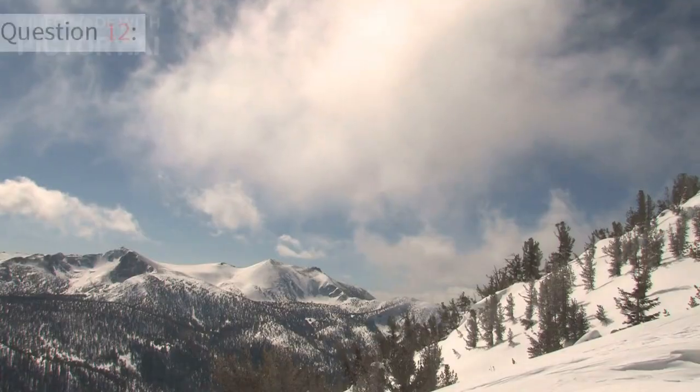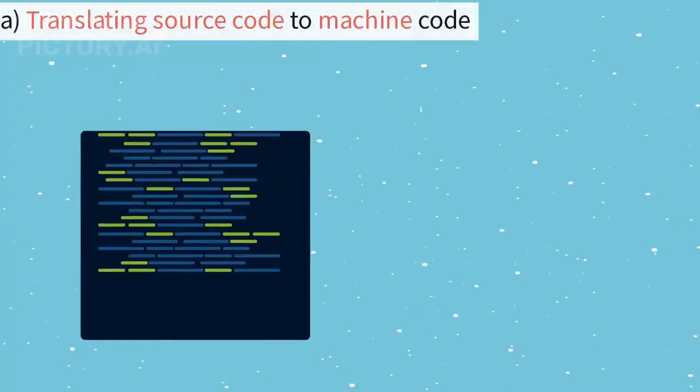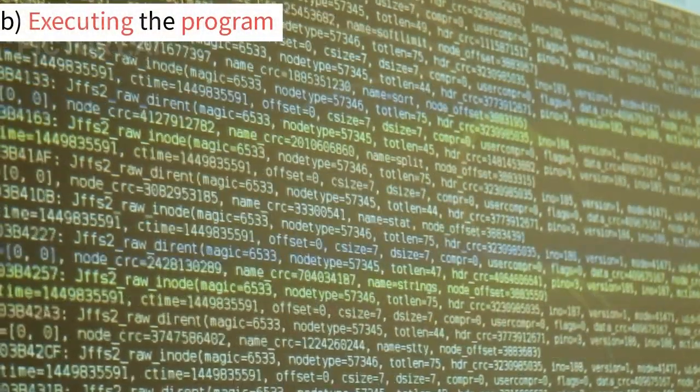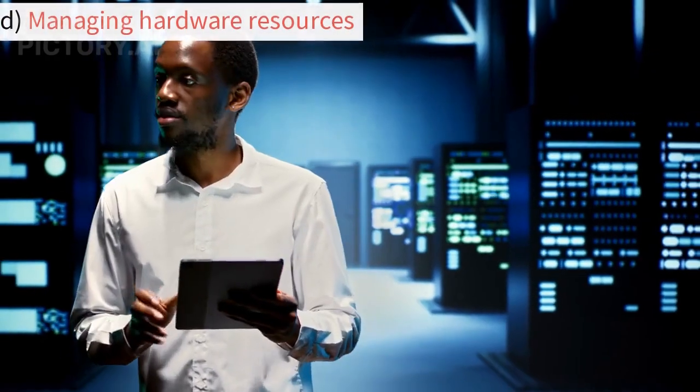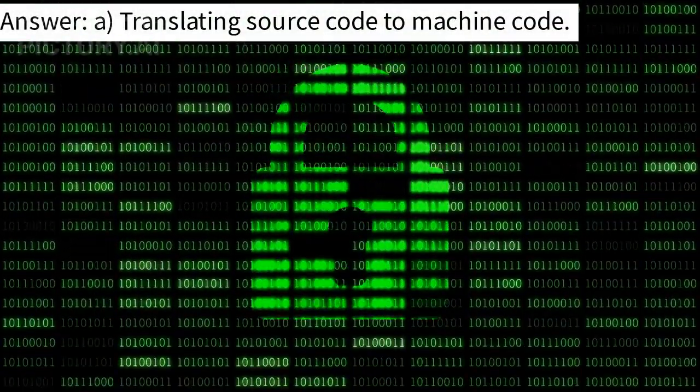Question 12. What is the purpose of a compiler in programming? A. Translating source code to machine code. B. Executing the program. C. Debugging code. D. Managing hardware resources. Answer: A. Translating source code to machine code.